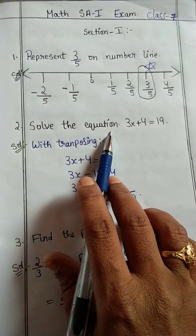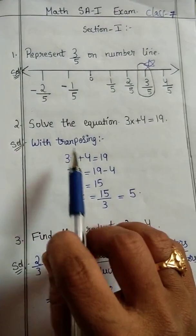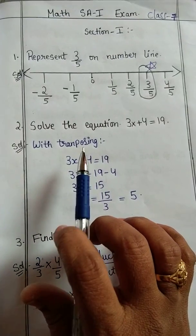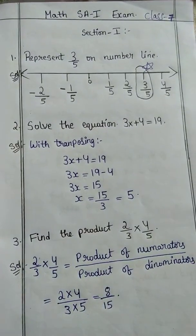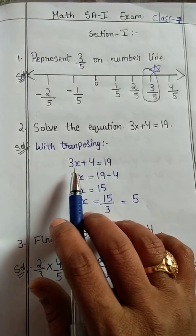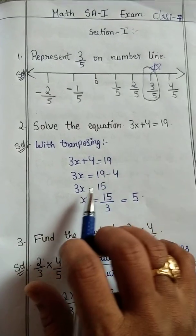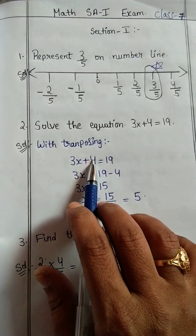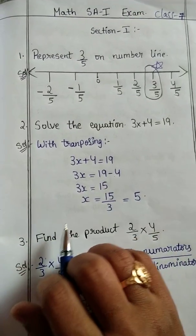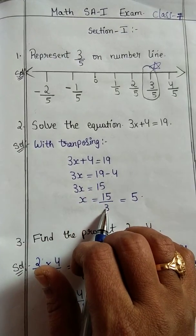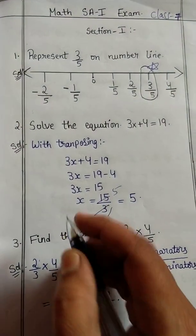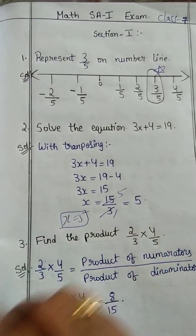Next, second question: solve the equation 3x plus 4 is equal to 19. Here they have given solve, but did not mention any method. I took the with transpose method. So 3x plus 4 is equal to 19. Now 3x is equal to 19, transpose of plus 4 will become minus 4. 3x equals 19 minus 4, which is 15. Now x is equal to, transpose of multiplication will give division, so 15 by 3. Cancellation gives x is equal to 5.